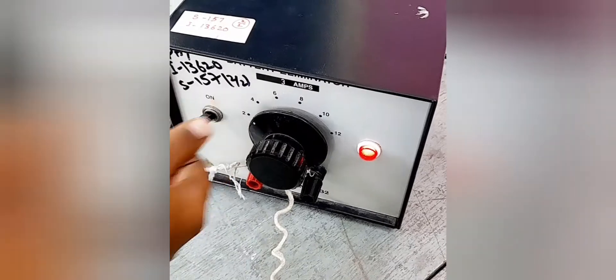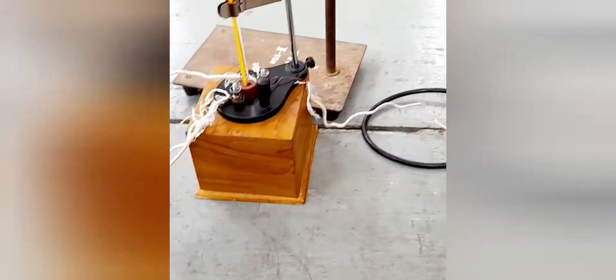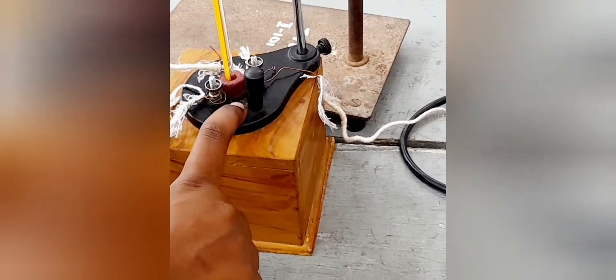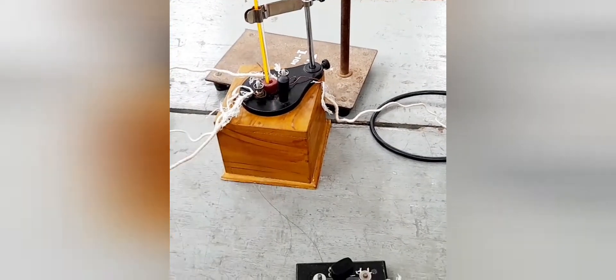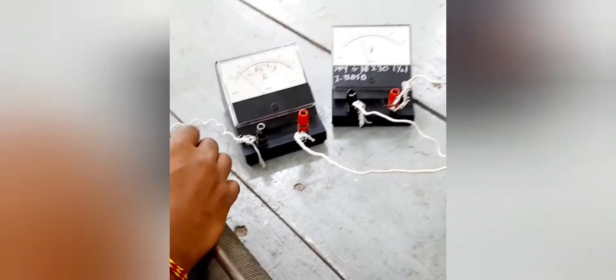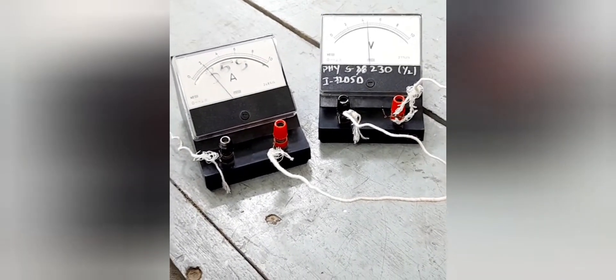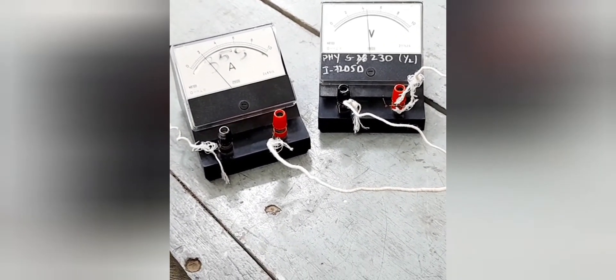When we switch on the battery eliminator, the current passes through the calorimeter. The amount of heat and current transported into the calorimeter we can measure easily with the help of ammeter and voltmeter. If we adjust the rheostat, the deflection shows in ammeter and voltmeter. We set the constant voltage and ammeter with the help of rheostat.